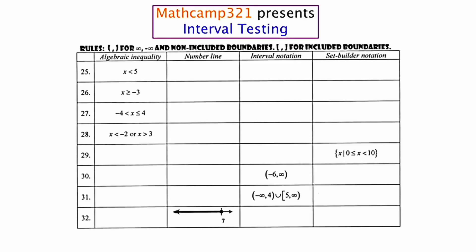Suppose we have the algebraic inequality x is less than 5. We might denote that with a number line in the following way. I'm going to put 5 on a number line. Because it's less than and not less than or equal to, I'm going to use an open circle, and I'm going to shade to the left. That number line represents x is less than 5.